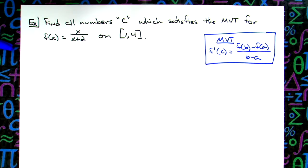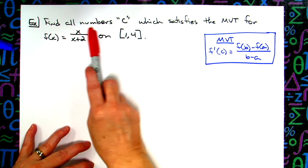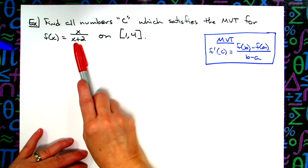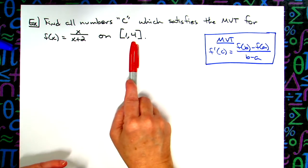In this video, we're going to take a look at a pretty typical Calc 1 question here. It says find all numbers C which satisfy the mean value theorem for f(x) = x/(x+2) on the closed interval from 1 to 4.